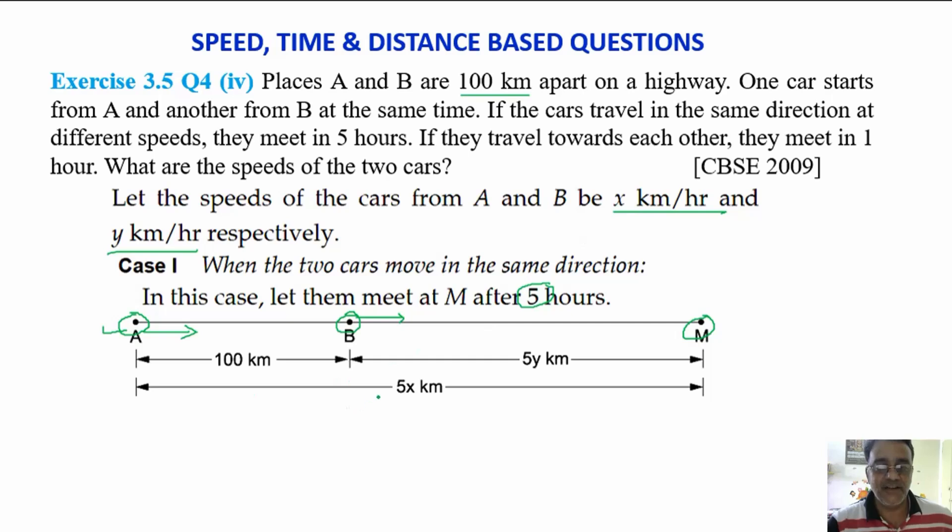Distance equals speed into time. If you multiply these two, you will get 5x km. Similarly, for car starting at B is 5y km. So AM equals 5x km and BM equals 5y km.